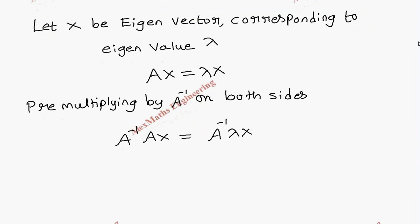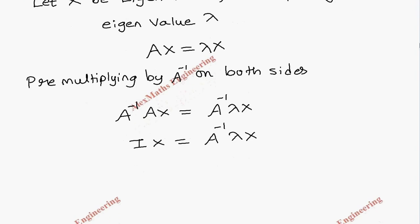A inverse into A is nothing but identity. So IX equal to A inverse into lambda X. Anything multiplied by identity is equal to the same value, so only X will be remaining.